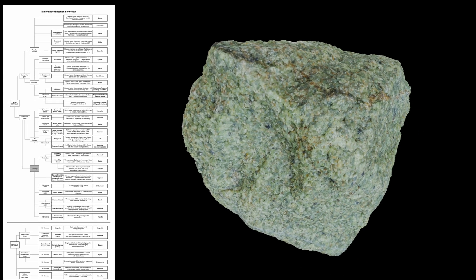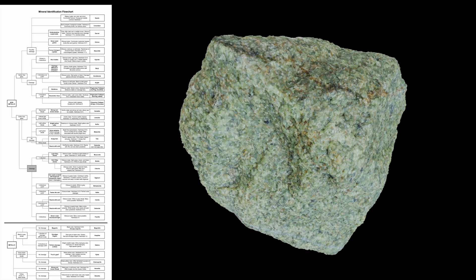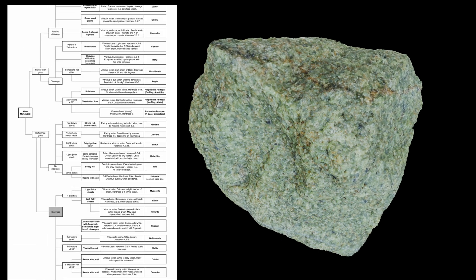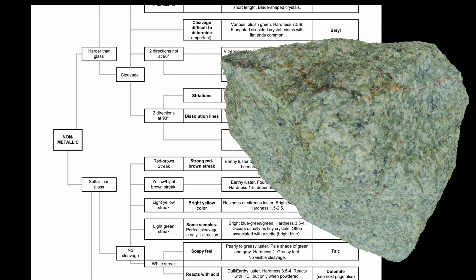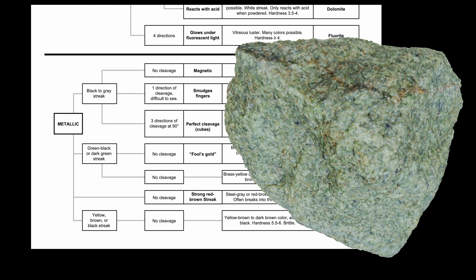Here we go. I have this sample. The first thing we want to do is work on the flowchart from left to right, and the first characteristic involves the luster of the mineral — how it reflects light off of its surface. We really only have two groups: non-metallic, which you see there on the left, or metallic, which are the samples on the bottom of the chart.